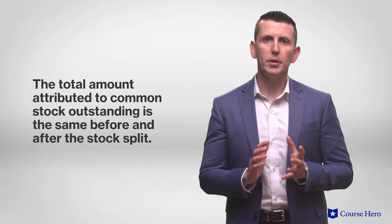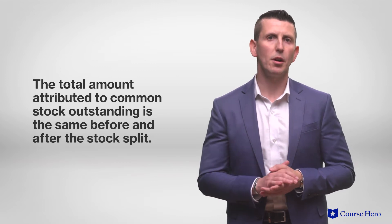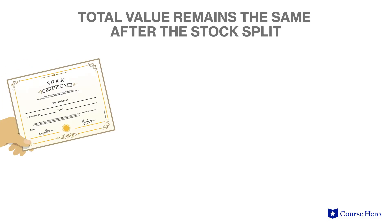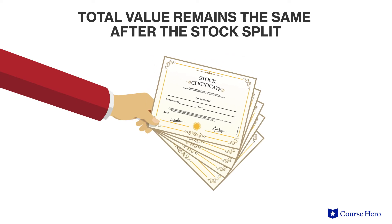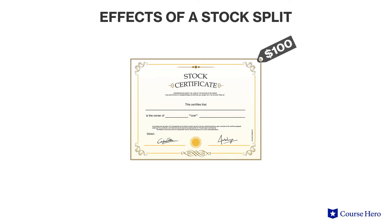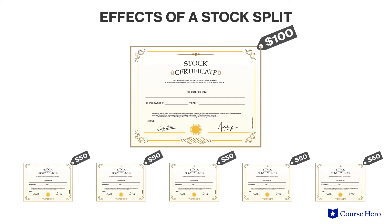The total amount attributed to common stock outstanding is the same before and after the stock split. Each individual stockholder still owns the same proportional ownership. Only the number of shares and the denomination of the shares has changed, but the total value remains the same. After the stock split, each share of stock trades for $20, which makes ownership in the company more accessible to those who perhaps were not willing or able to invest at least $100 to buy one share before the stock split.